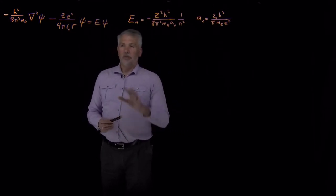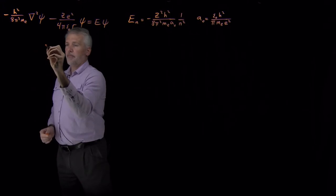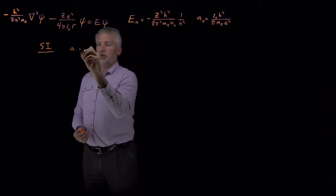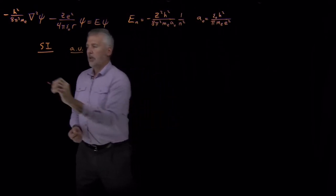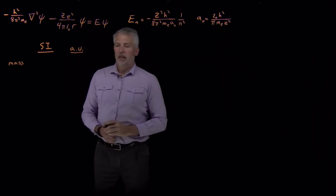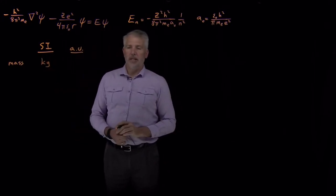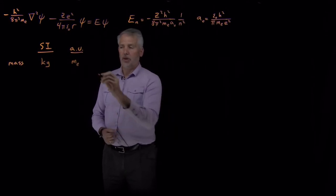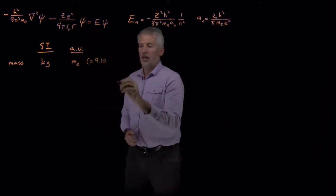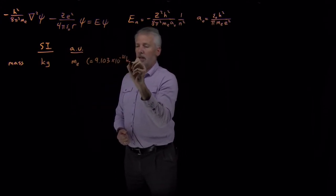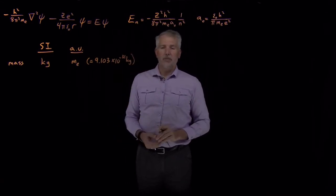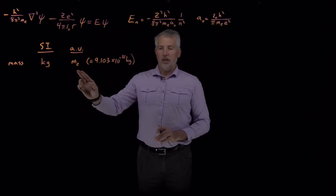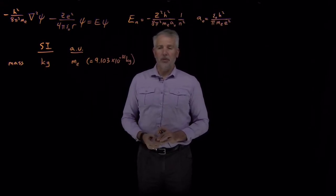The same thing is true for atomic problems. There's a set of units — not SI — that will be much more convenient for us, and we call these atomic units. For every type of quantity, for example mass: in SI units the unit of mass is a kilogram, but in atomic units we let the fundamental mass unit be the mass of an electron. The mass of an electron expressed in SI units is 9.1×10⁻³¹ kilograms. That value is one electron mass, which is our unit of mass in atomic units, just as the kilogram is the fundamental unit in SI.